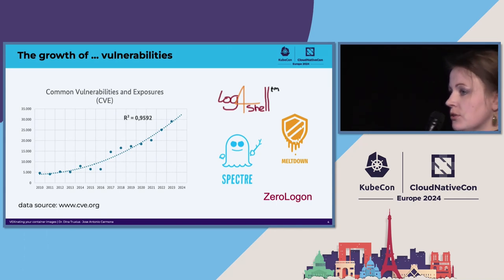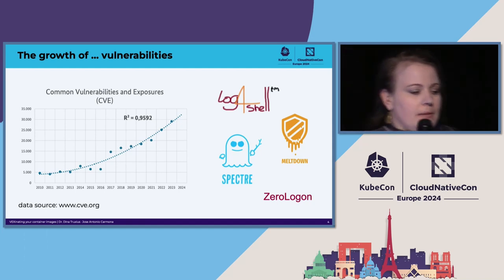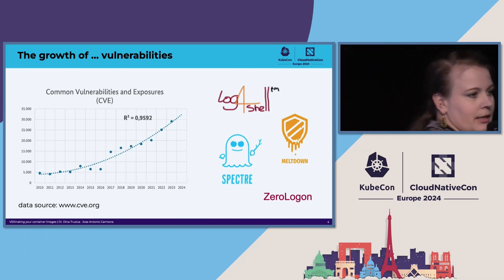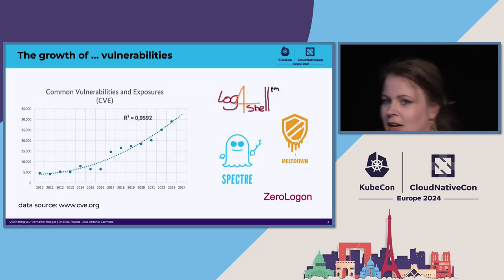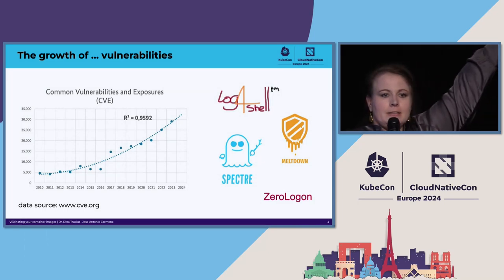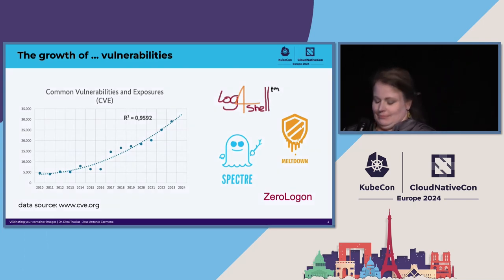What you also see on the slide are some of my favorite VIP vulnerabilities — like Spectre, Meltdown, and Log4Shell. Who was entertained with Log4Shell? Raise your hand.